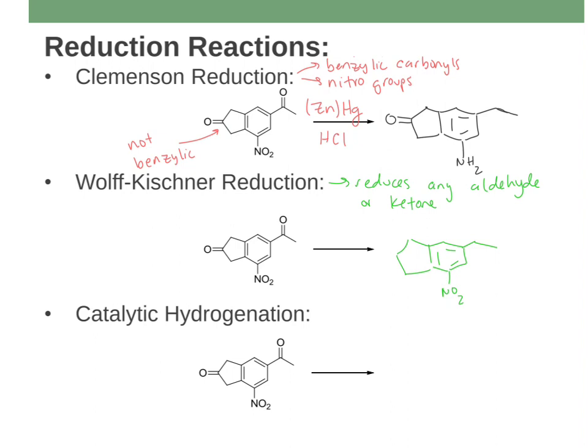I don't require you to know the mechanisms for these, but the Wolff-Kishner mechanism involves forming a hydrazone — like an imine — and then base helps remove hydrogens. The reagents are always hydrazine (H2NNH2) and base, typically sodium hydroxide. So if you see hydrazine and sodium hydroxide together, that's a Wolff-Kishner reduction — it reduces any aldehyde or ketone.